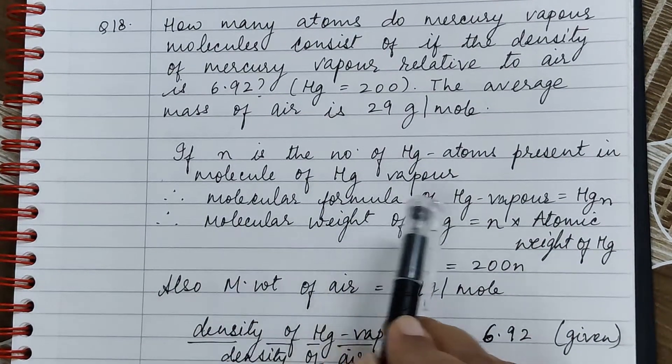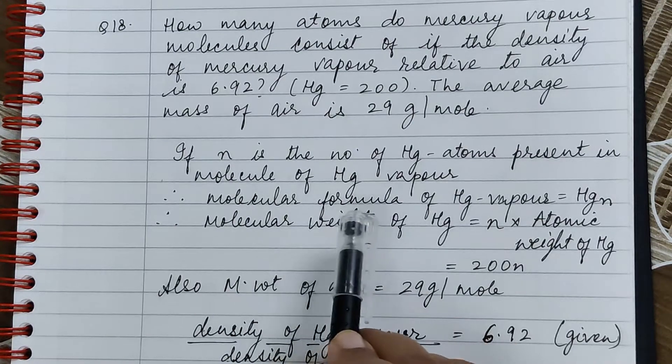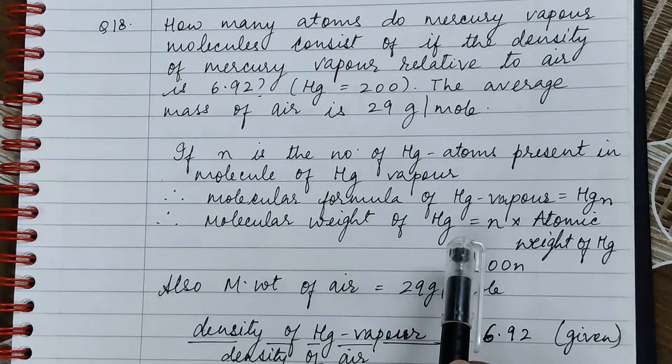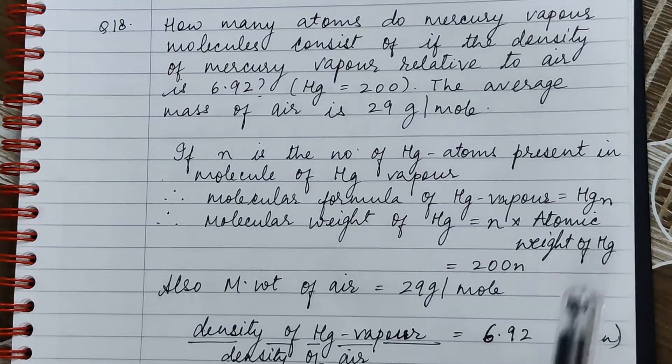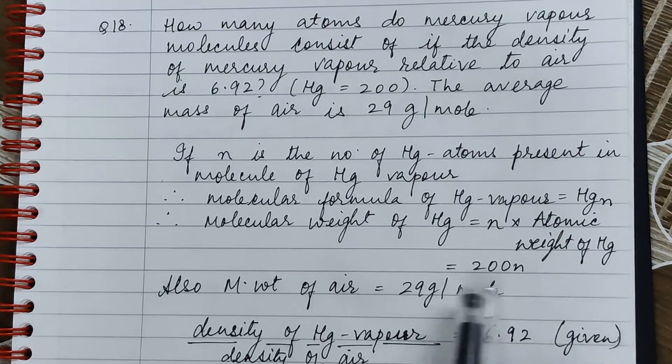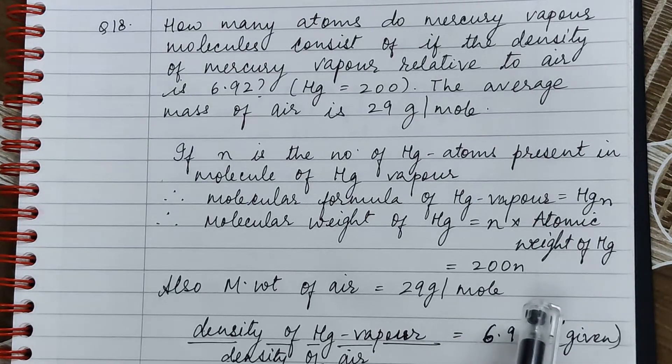Now let's assume that the number of mercury atoms present in mercury vapor is N. So the molecular formula of mercury vapor will be Hgn and the molecular weight will be N into atomic weight of mercury, which is equal to 200N.